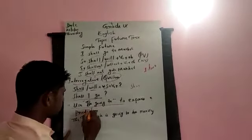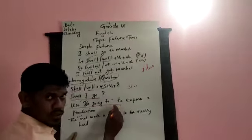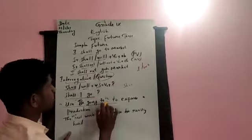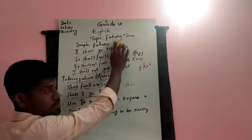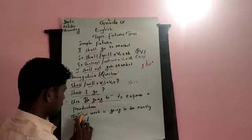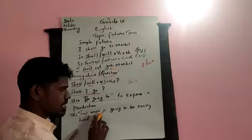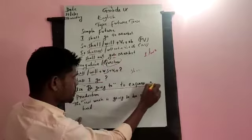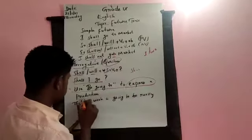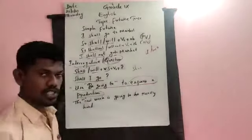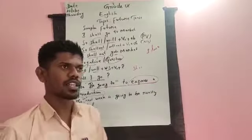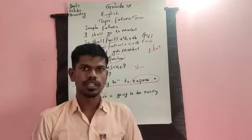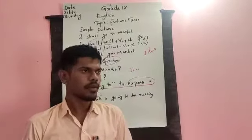Here we also use 'be going to' to express a prediction, and this is applicable only in simple future. For example: 'The test next to me is going to be really hard.' That means we are expressing a prediction — an action which is going to happen. For example, if you find the sky is full of clouds, then you may say that...